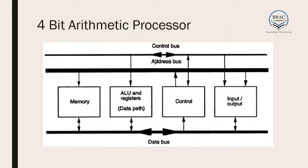In our example we will make a 4-bit arithmetic processor. This processor takes two inputs, each 4 bits wide, and gives a 4-bit output. It can perform addition, subtraction, multiplication, division, and such tasks.